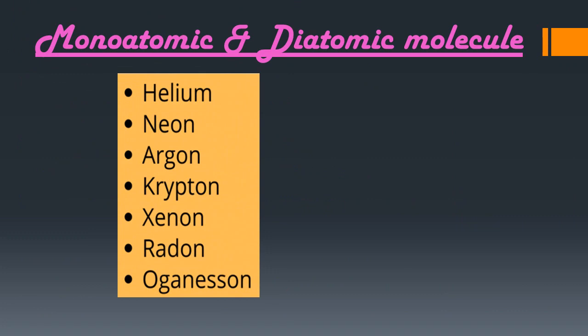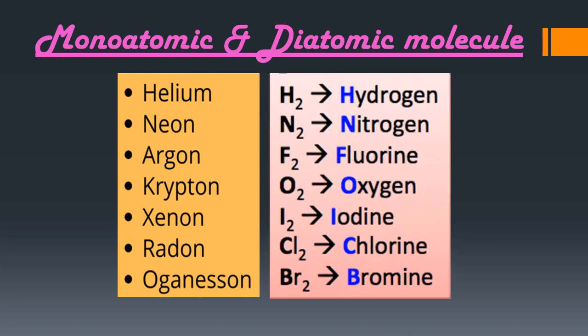Examples of monoatomic molecules include helium, as studied previously. Examples of diatomic molecules include H₂ (two hydrogen atoms combined), N₂ (nitrogen), F₂ (fluorine), O₂ (oxygen), I₂ (iodine), Cl₂ (chlorine), and Br₂ (bromine).